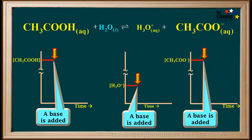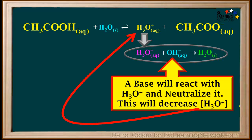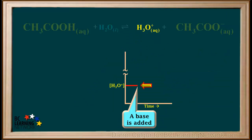At this point, we add a base like NaOH to this buffer. A base will react with H3O+ and neutralize it, as shown in this net ionic equation. In this neutralization reaction, hydronium is consumed, so this will decrease the concentration of H3O+. So we add the base and the concentration of H3O+ quickly decreases.